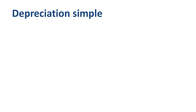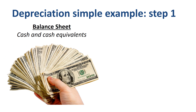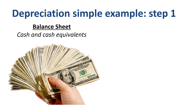Step 1: Make sure you have some cash to spend. You could raise capital from shareholders, take a loan from the bank, or generate cash from your business operations. This is recorded in a balance sheet account called cash and cash equivalents.